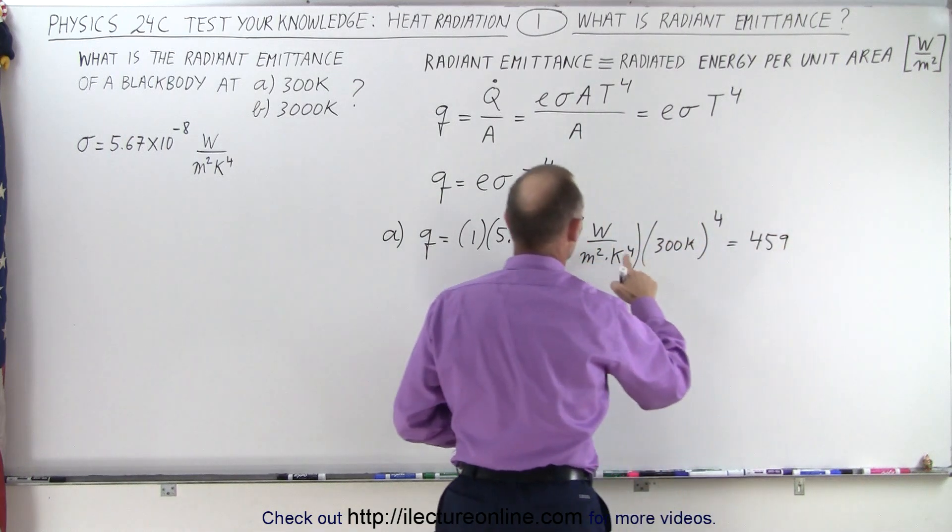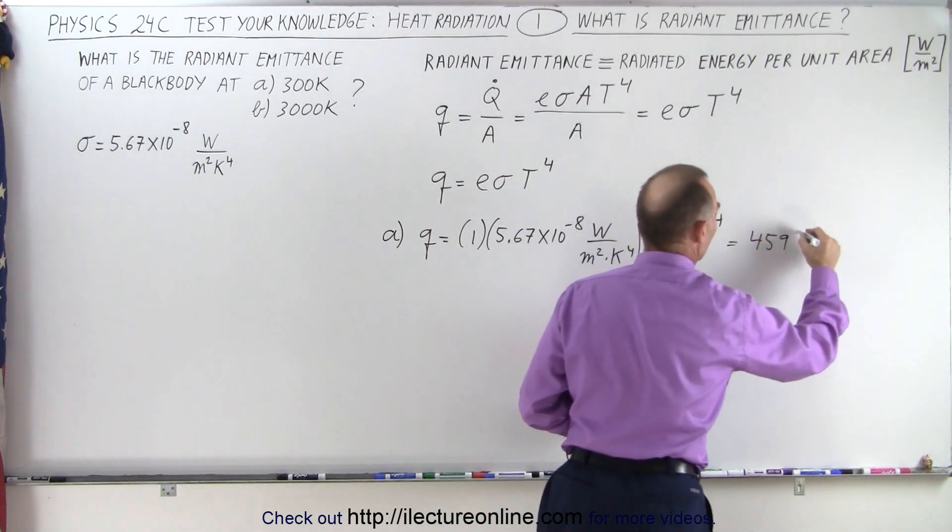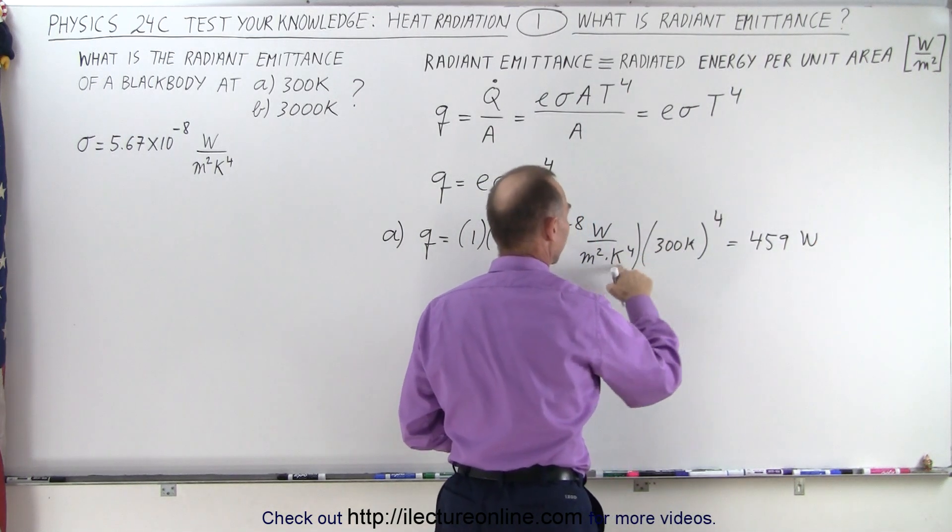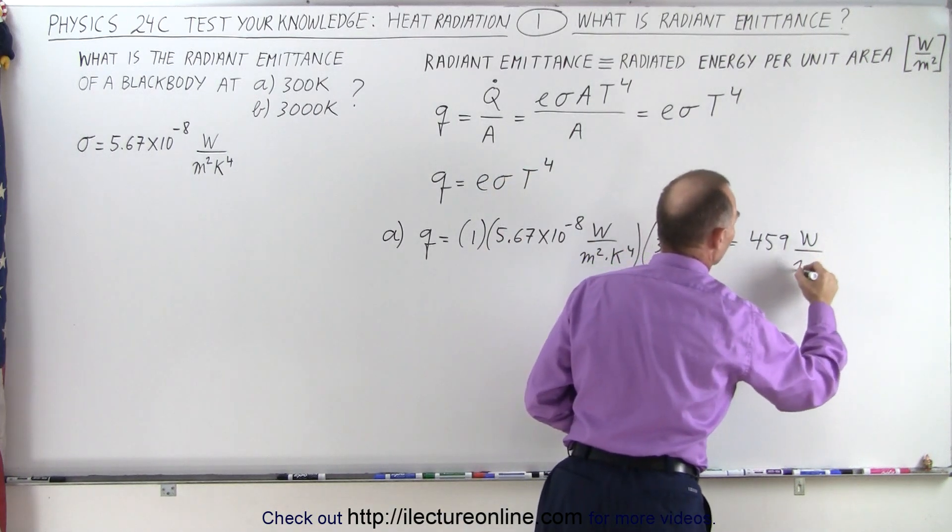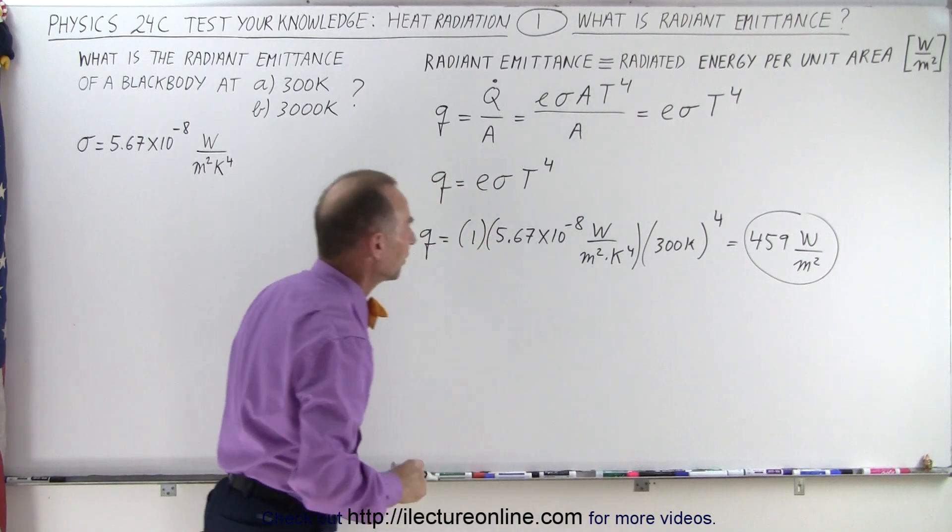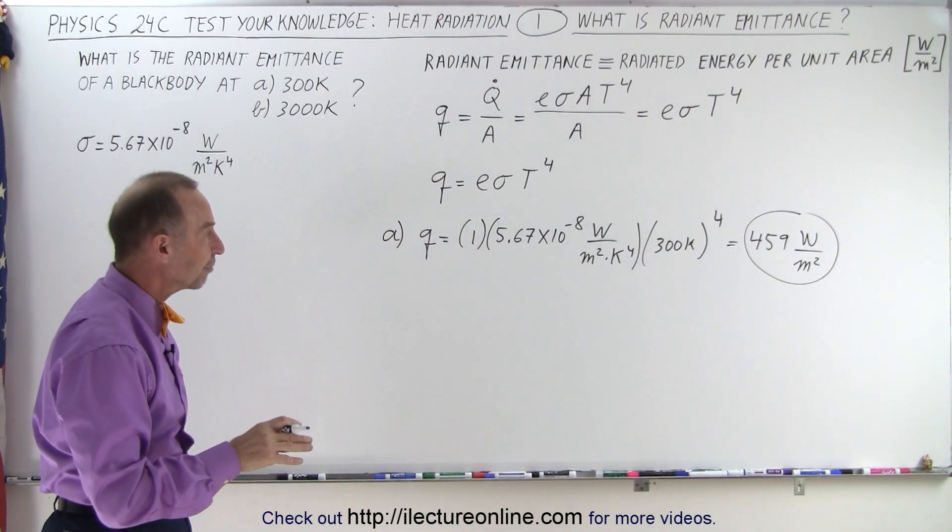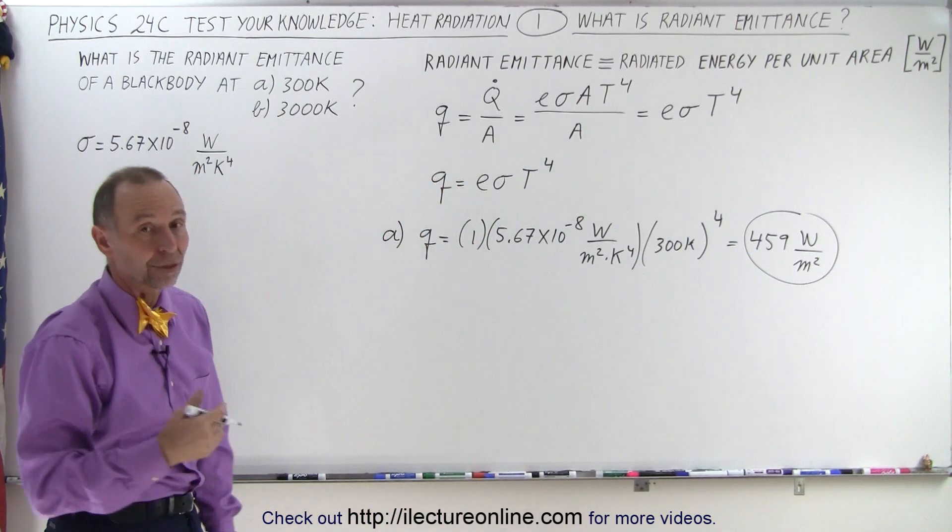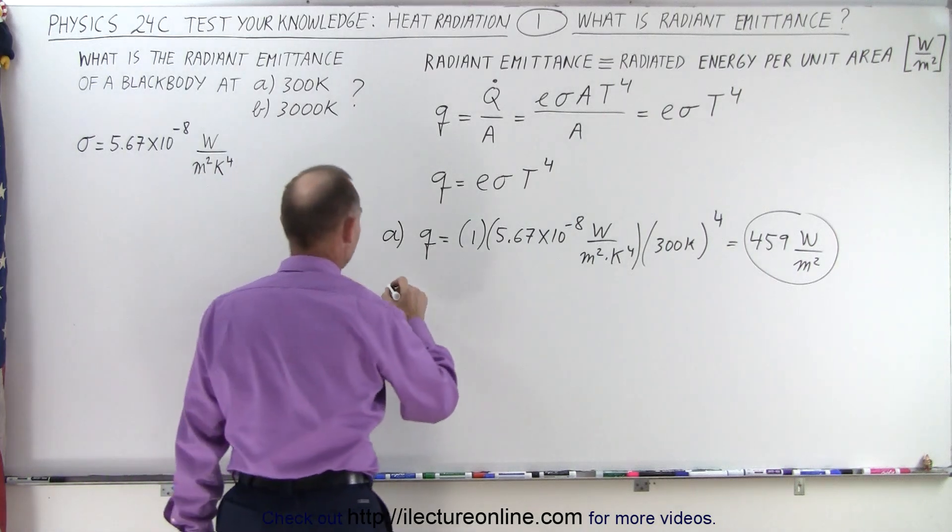So 459, the units will be watts per square meter. Notice that Kelvin to the fourth and Kelvin to the fourth cancel, which gives us the correct units, watts per square meter. Now let's do it again for an object that is 10 times as hot, 3000 Kelvin instead of 300 Kelvin.